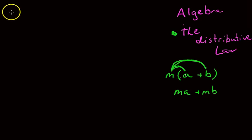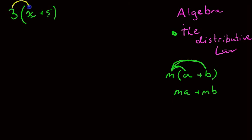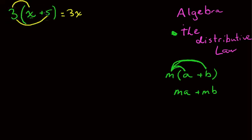Let me show you an example. If we had 3 times x plus 5 — now we can't add the x plus 5 in the brackets because they're not like terms, so we need to come up with a different way to simplify this, and the way that we can do it is with our distributive law. So we can say 3 times x is 3x, and 3 times positive 5 is positive 15. So that's how the distributive law works.